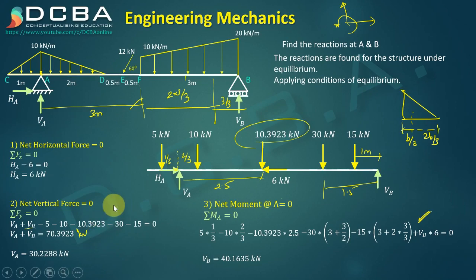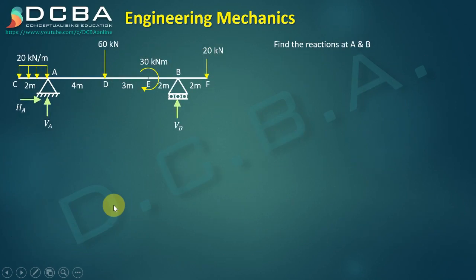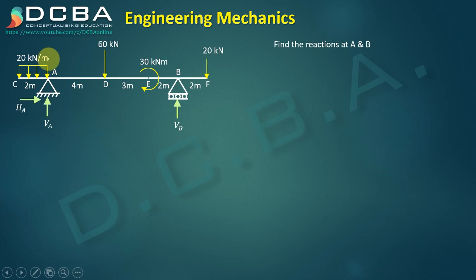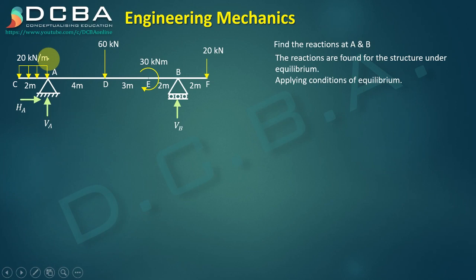That completes the first numerical. Now we solve a second, simpler numerical to find reactions at point A (hinge: HA and VA) and point B (roller: VB). We assume the structure is under equilibrium and convert the UDL from A to C into a point load.